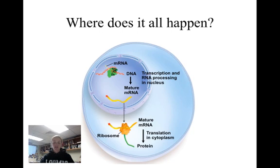In eukaryotes, this process happens in two different places. Transcription occurs in the nucleus, and the mRNA then gets shipped out into the cytoplasm where it is translated by ribosomes. Since prokaryotes have no nucleus, the entire process occurs in the cytoplasm.